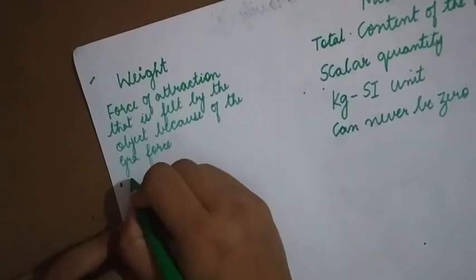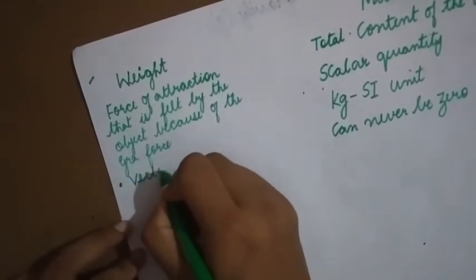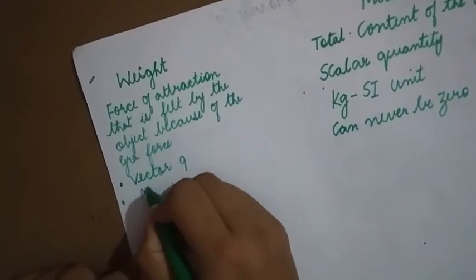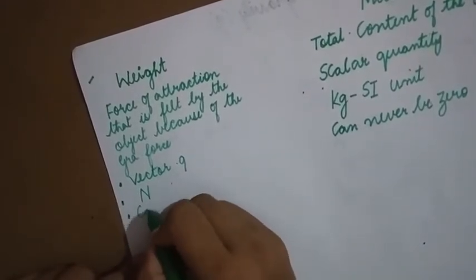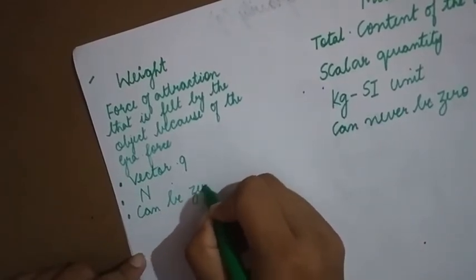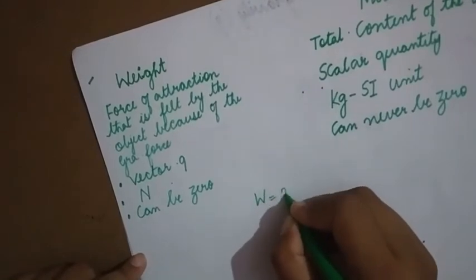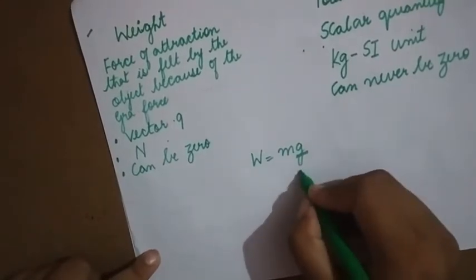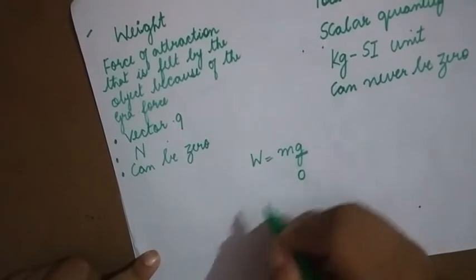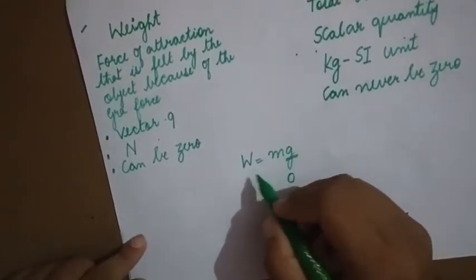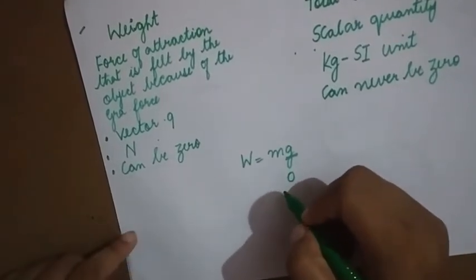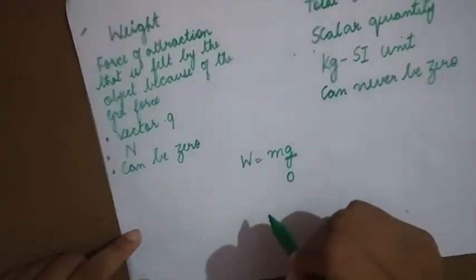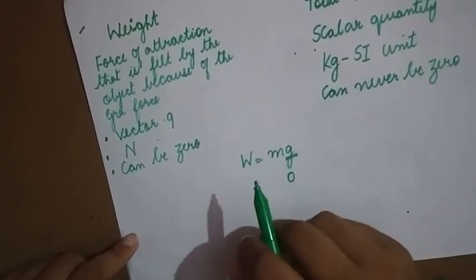Weight is a vector quantity and the SI unit of weight is Newton. Weight can be 0. Weight is given by the formula W = Mg. Now, suppose if G is 0, if acceleration due to gravity is 0, then weight will automatically be 0. It is found that right at the center of the earth, the acceleration due to gravity becomes 0, so weight can be 0 in this particular case.